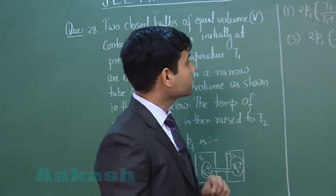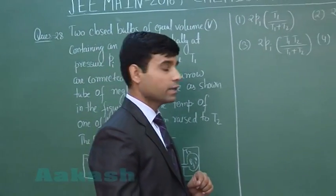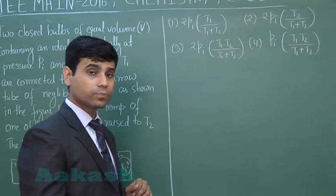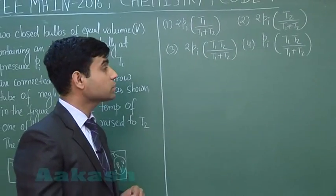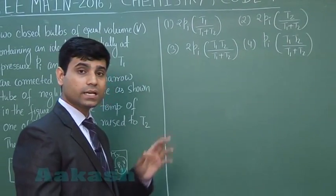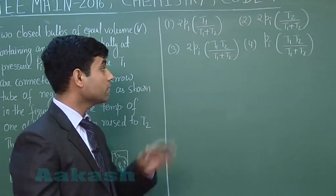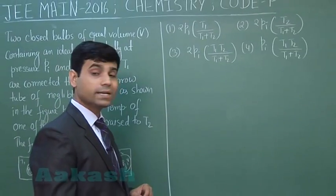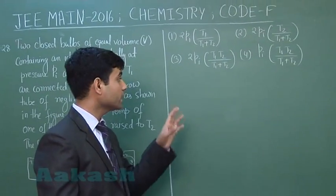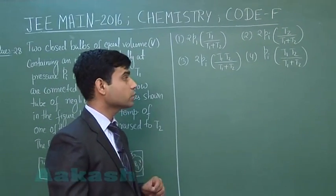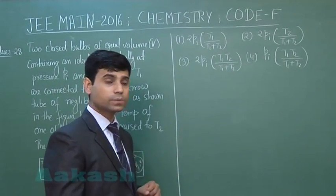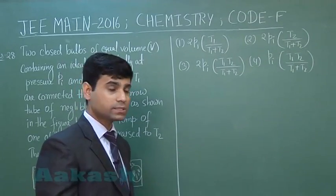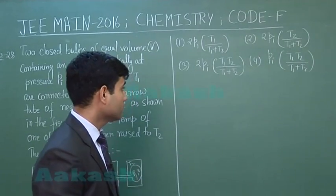The first option is 2·PI·T1/(T1+T2). The second option is 2·PI·T2/(T1+T2). The third option is 2·PI·T1·T2/(T1+T2), and the fourth option is PI·T1·T2/(T1+T2).